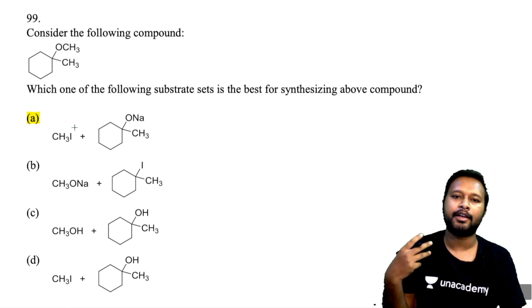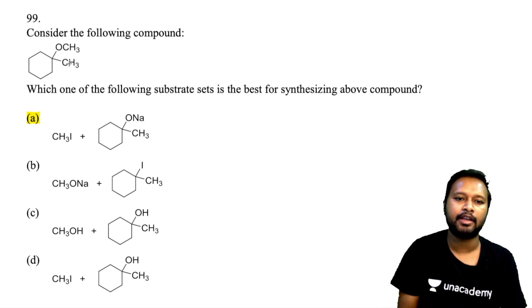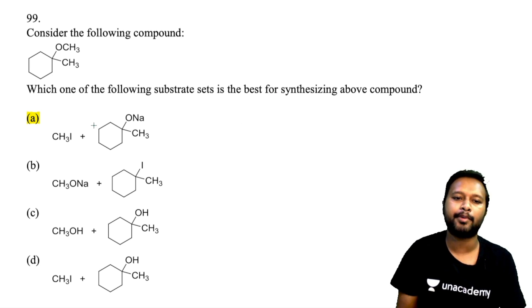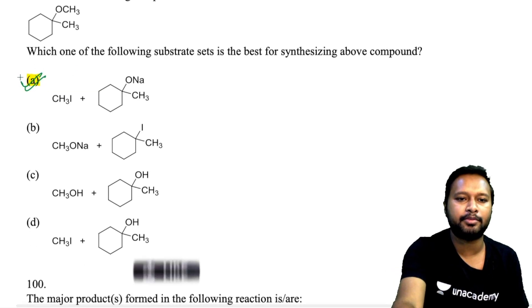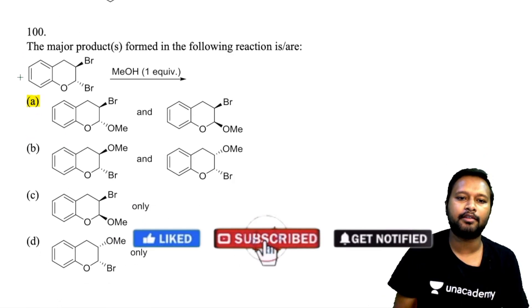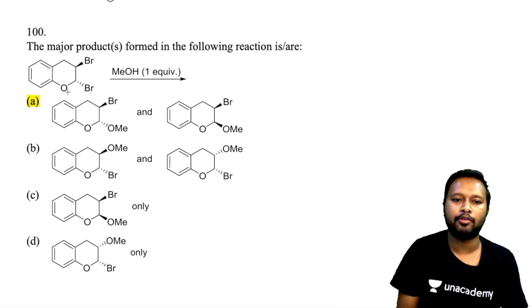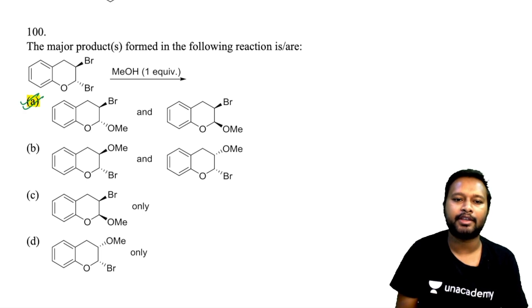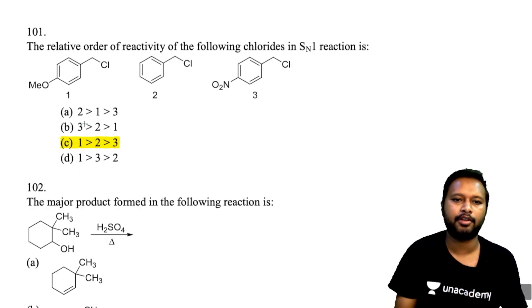Moving to reaction-based questions. Question 99 asks the best substrate for synthesizing a given compound. Option A is correct — the compound is formed via SN2 mechanism directly and simply. Question 100 asks for the major product of a given reaction: the lone pair of oxygen kicks out bromine via an intramolecular SN2, and MeO⁻ can attack from above or below the plane, giving a mixture. Option A is correct.